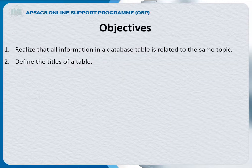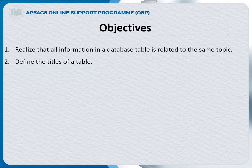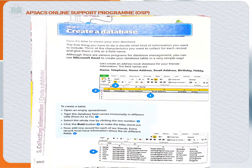The objectives are: first, realize that all information in a database table is related to the same topic. Second, define the titles of our table fields before starting the task. Third, we recap our previous knowledge from the previous task one of this module.